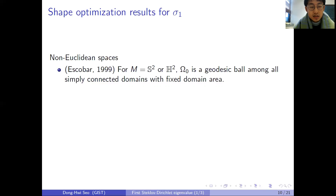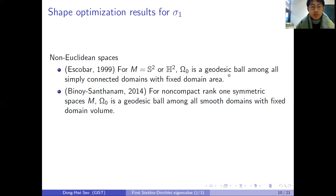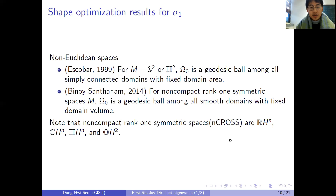For non-Euclidean spaces, this direction was initiated by Escobar in 1999. He considered two-dimensional space forms and showed that among simply connected domains with fixed domain area, the geodesic ball is the maximal domain. Minhoi and Santanam then generalized his results for non-compact rank-1 symmetric spaces, which are classified by real hyperbolic space, complex hyperbolic space, quaternionic hyperbolic space, and the octonionic hyperbolic plane.